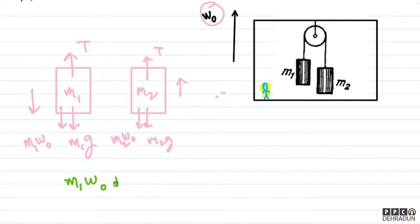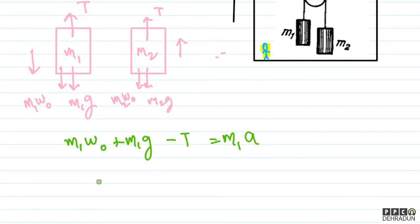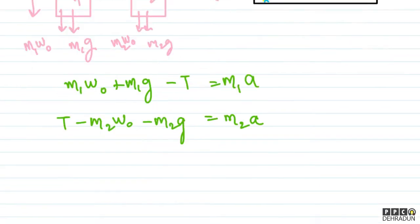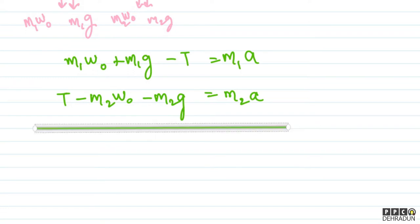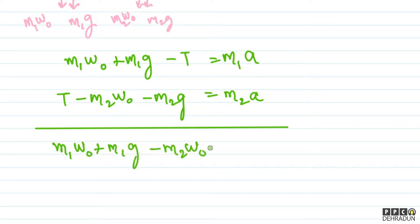From the free body diagram we get: m1·w0 + m1·g − T = m1·a. And similarly for M2 we write: T − m2·w0 − m2·g = m2·a. These two equations are of the same form. Now if we add these equations, the tension cancels out easily. So: m1·w0 + m1·g − m2·w0 − m2·g = (m1 + m2)·a.